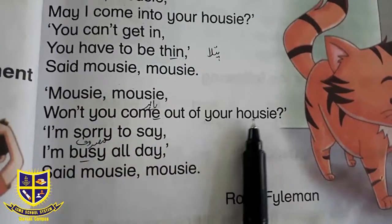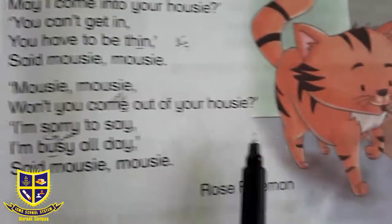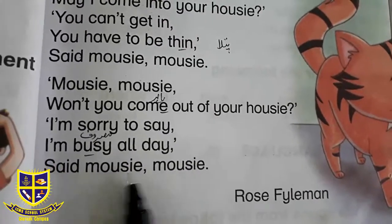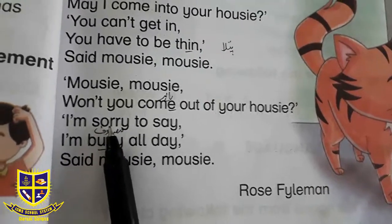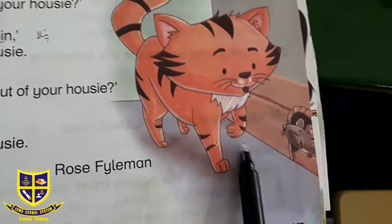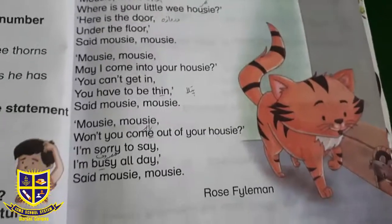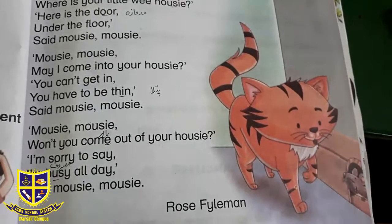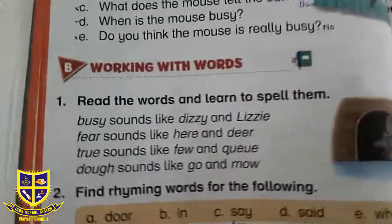اب cat کہتی ہے: 'Mousey mousey, won't you come out of your housey?' یعنی mouse کیا تم اپنے گھر سے باہر نکل سکتے ہو؟ Mouse کہتا ہے: 'I'm sorry to say, I'm busy all day, said mousey mousey.' یعنی مجھے معافی چاہیے، لیکن میں سارا دن بہت مصروف ہوتا ہوں، اس لیے باہر نہیں آ سکتا۔ یہ تھی ایک بہت cute سی poem — cat اور mouse کے درمیان باتچیت — جو Rose Fileman نے لکھی تھی۔